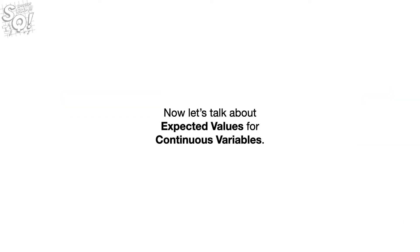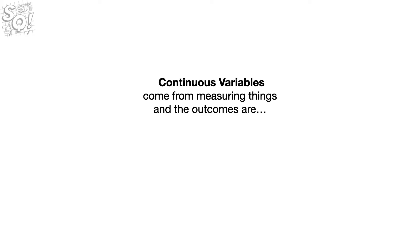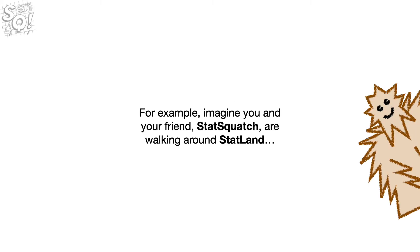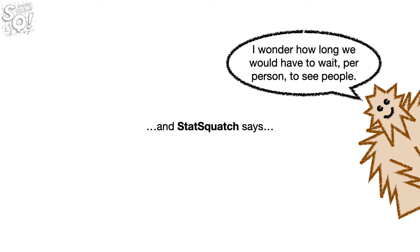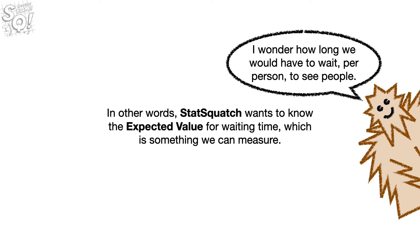Now let's talk about expected values for continuous variables. Continuous variables come from measuring things, and the outcomes are continuous. For example, imagine you and your friend Statsquatch are walking around Statland, and Statsquatch says: 'I wonder how long we would have to wait, per person, to see people.' In other words, Statsquatch wants to know the expected value for waiting time, which is something we can measure.